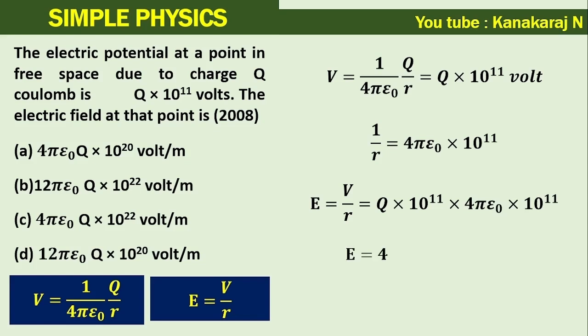As we multiply these two quantities, electric field at that point e equals 4 pi epsilon r q multiplies 10 power 22 volt per meter. So, option c is correct. Thank you.